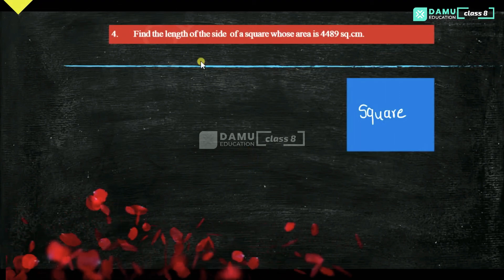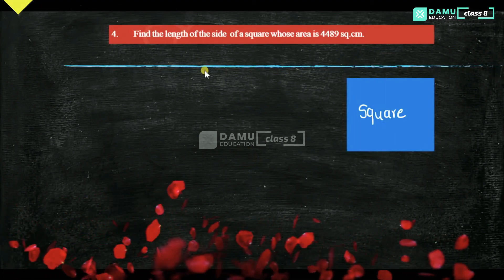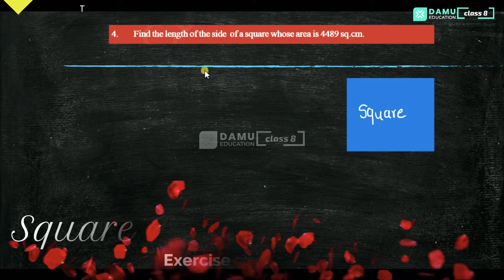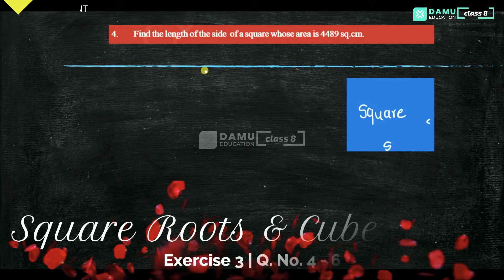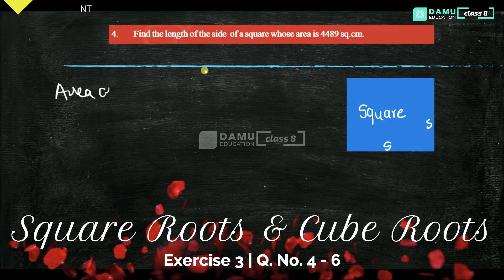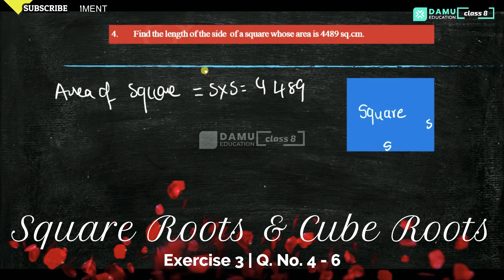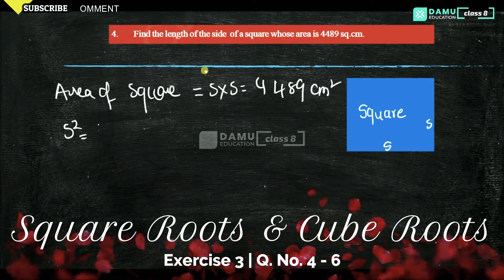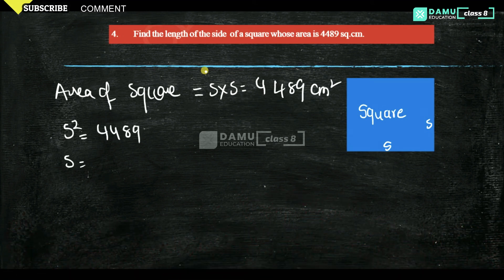Our next question is: find the length of the side of a square whose area is 4489 square centimeters. Area of a square is side × side. So side × side = 4489 cm², which means s² = 4489, and s = √4489. We have to calculate this using the division method.